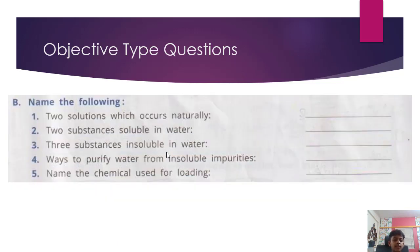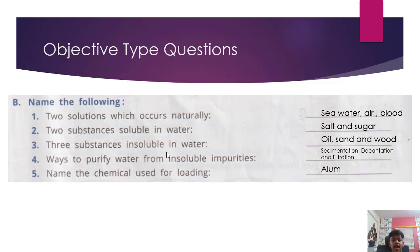B. Name the following. Two solutions which occur naturally: sea water, air, blood. Two substances soluble in water: salt and sugar. Three substances insoluble in water: oil, sand and wood. Ways to purify water from insoluble impurities: sedimentation, decantation and filtration. Name the chemical used for loading: Alum.